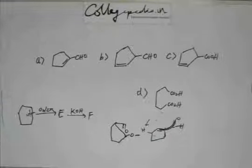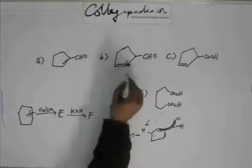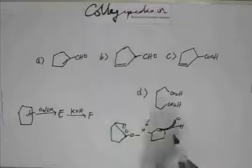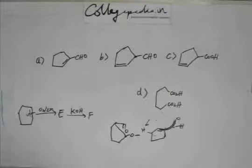So choose the correct option, correct option seems to be A because in B this alkene is not in conjugation with C double bond O because there is a sp3 hybridized carbon here. And in C option you have acid. Now acid you won't get.